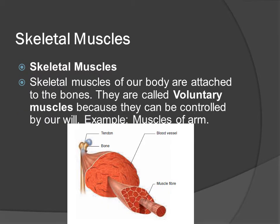Skeletal muscles of our body are attached to the bones. They are voluntary muscles because they can be controlled by our will. Examples include muscles of the arm, connected via tendons to bones, with blood vessels and muscle fibers.